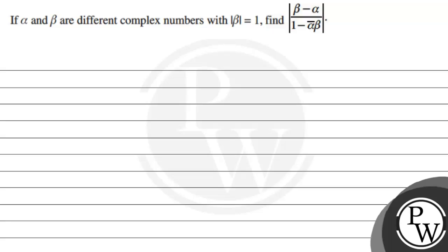Hello Bacho, let's first read the question. The question says that if alpha and beta are different complex numbers with modulus of beta equal to 1, then find modulus of beta minus alpha divided by 1 minus alpha bar times beta.